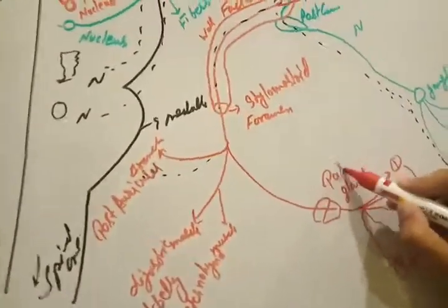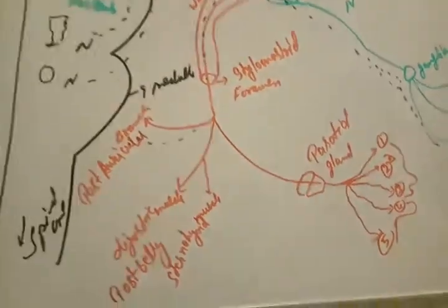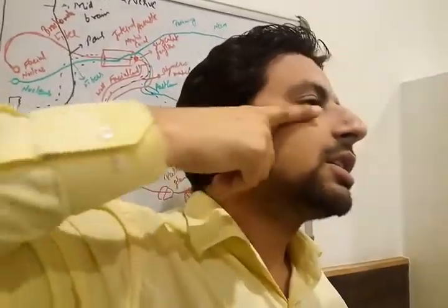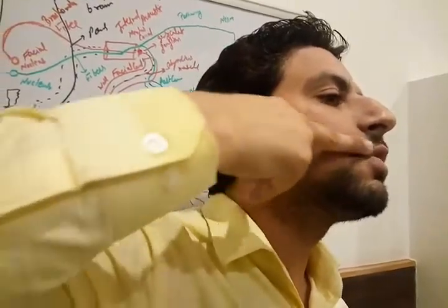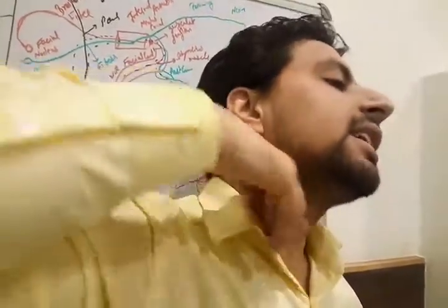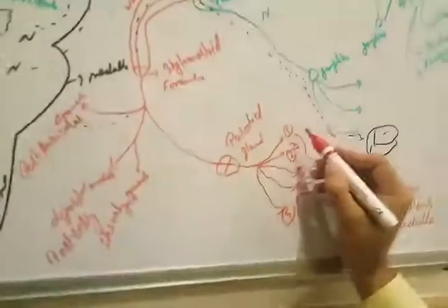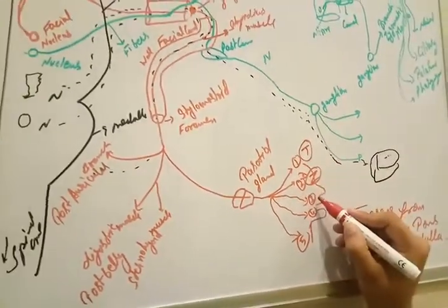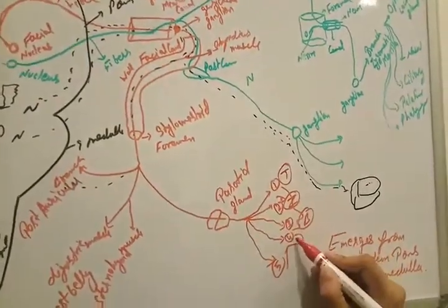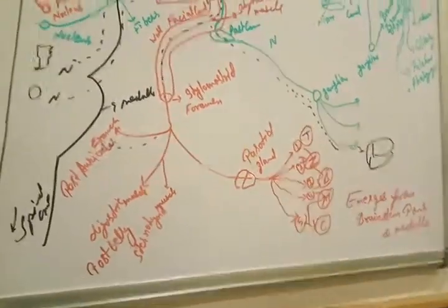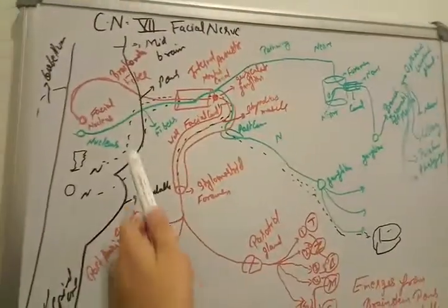Another branch of the branchial motor fiber goes to the parotid gland. The parotid gland divides into five parts. On the face: the temporal branch goes up toward the temple, the zygomatic branch goes toward the zygomatic bone, the buccal branch goes toward the cheek, the marginal mandibular branch goes toward the mandible, and the cervical branch goes down to the neck.